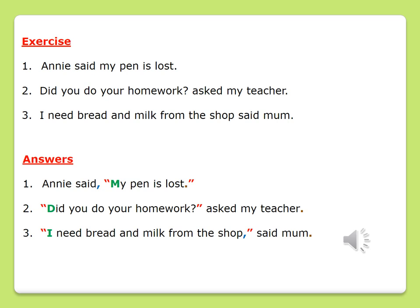Now that we understand the rules for direct speech, let's see if we can attempt this exercise. The first sentence given to us says: Annie said, "My pen is lost." The words that came out of Annie's mouth should be "my pen is lost," and that should be written within red quotation marks. We need to place our comma, which will come after the word 'said.' And our first word of the spoken sentence should be in a capital letter — capital letter M.